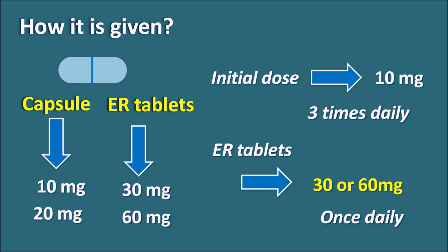In summary, nifedipine is a calcium channel blocker belonging to the dihydropyridine category. It is a dimethyl-1,4-dihydropyridine-3,5-dicarboxylate with an orthonitrophenyl ring at the fourth position. This drug selectively blocks L-type calcium channels on the vascular smooth muscle, inhibiting calcium influx and preventing contraction. In this way, nifedipine produces arterial vasodilation, reduces peripheral resistance, and reduces both diastolic and systolic blood pressure. Because of these actions, it is used as an anti-hypertensive and for vasospastic and chronic stable angina. Since it does not act on cardiac muscle, it is not used for cardiac arrhythmias.